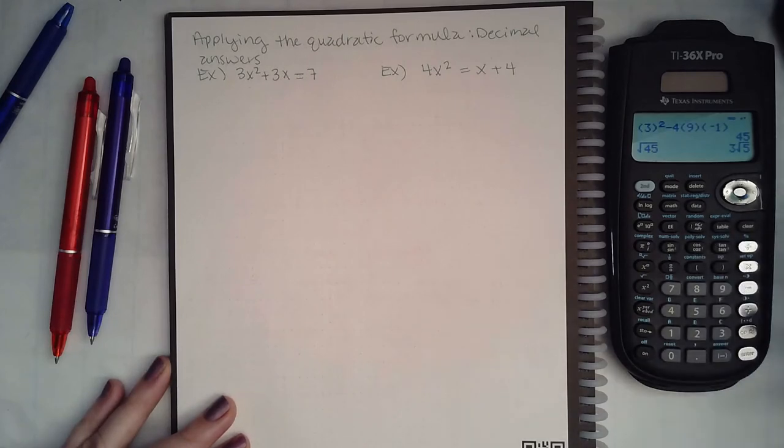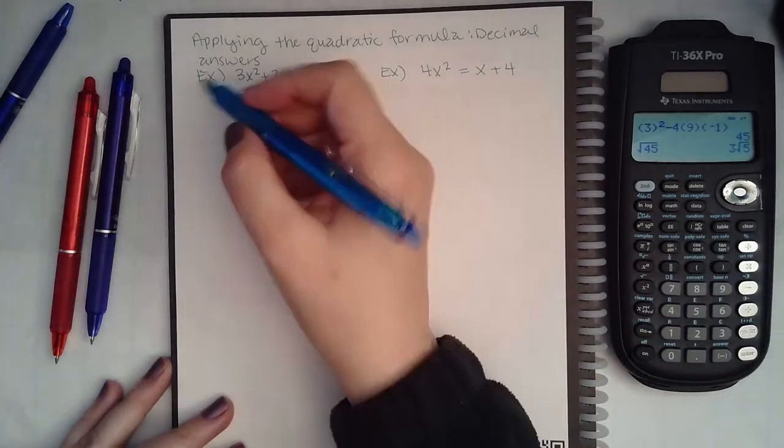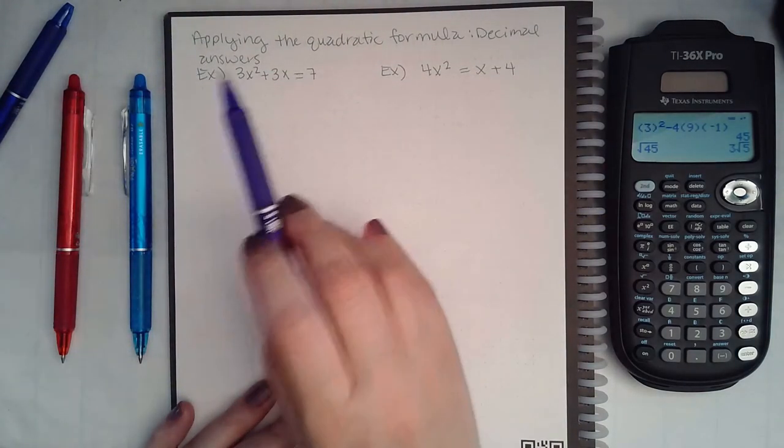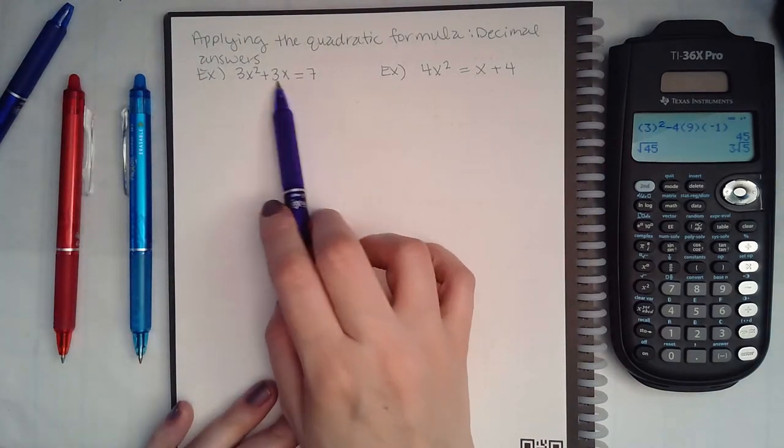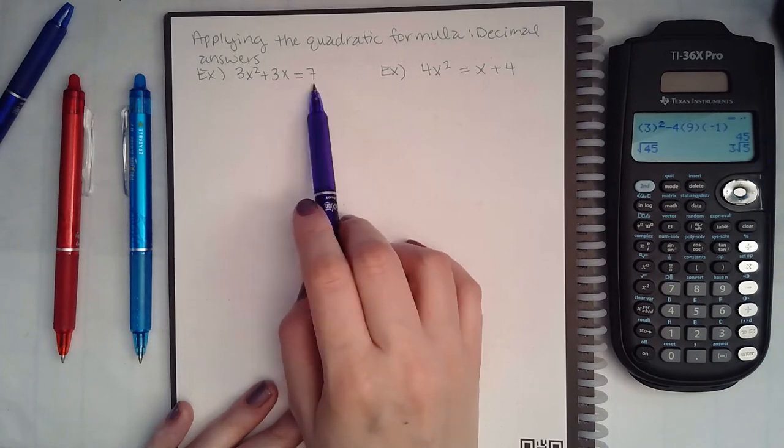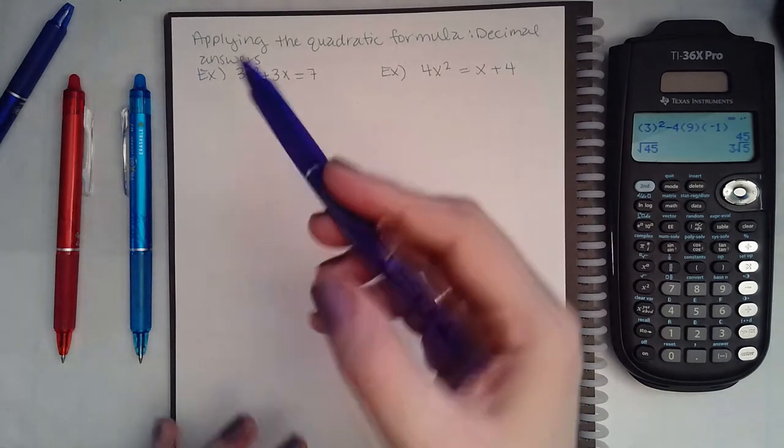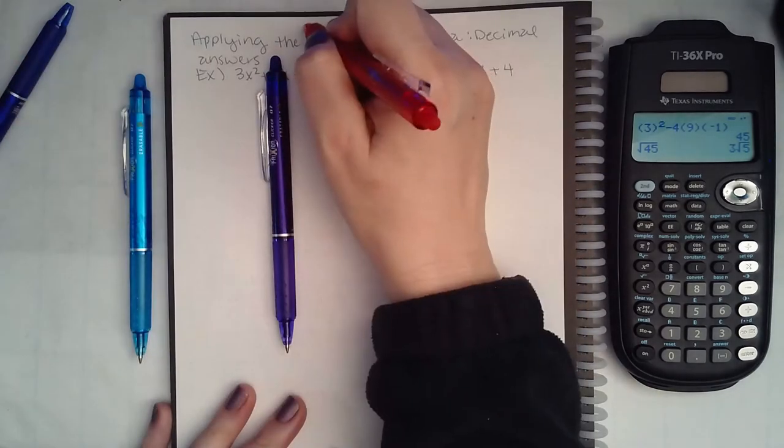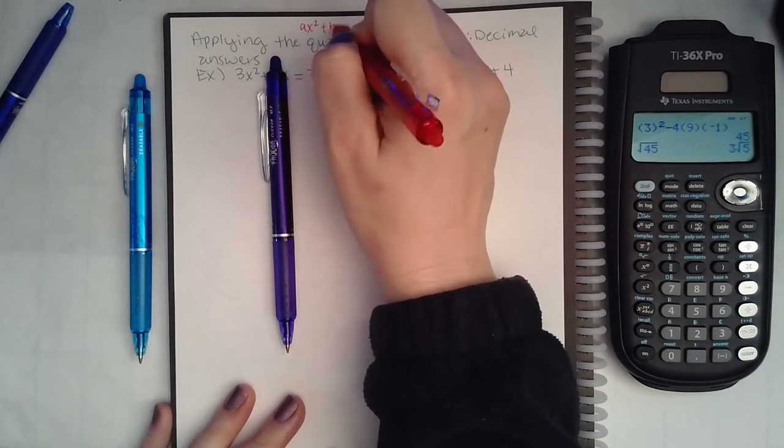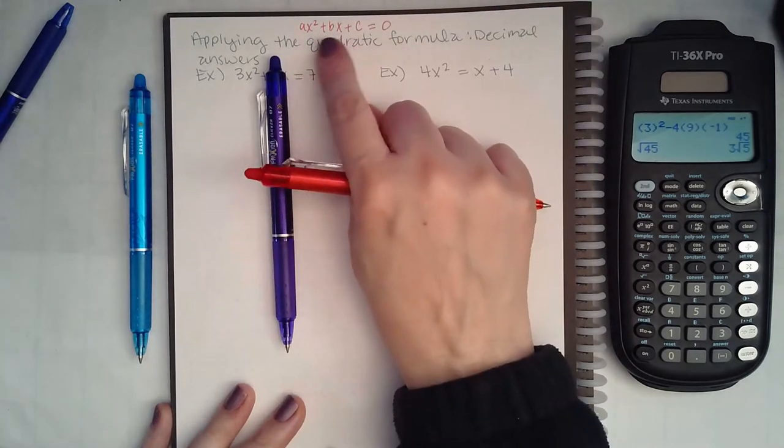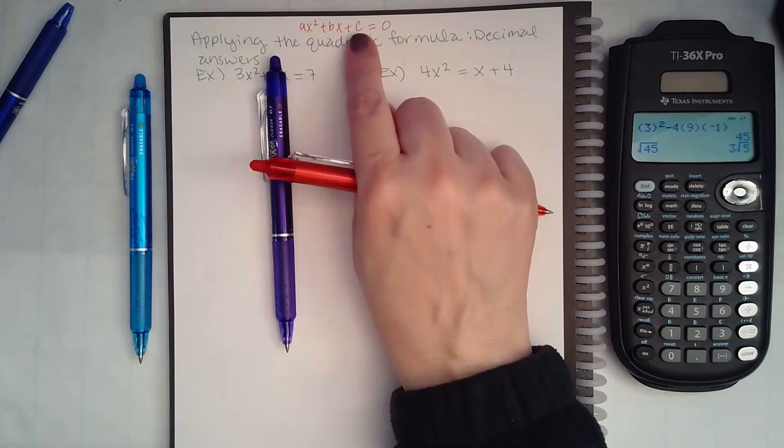Let's first identify our values. Now be careful, notice that this one is not set up in the correct form to identify the a, the b, and c. It must be in the form ax squared plus bx plus c equals zero, not necessarily pluses, because if b and c are negative then these wouldn't be pluses.